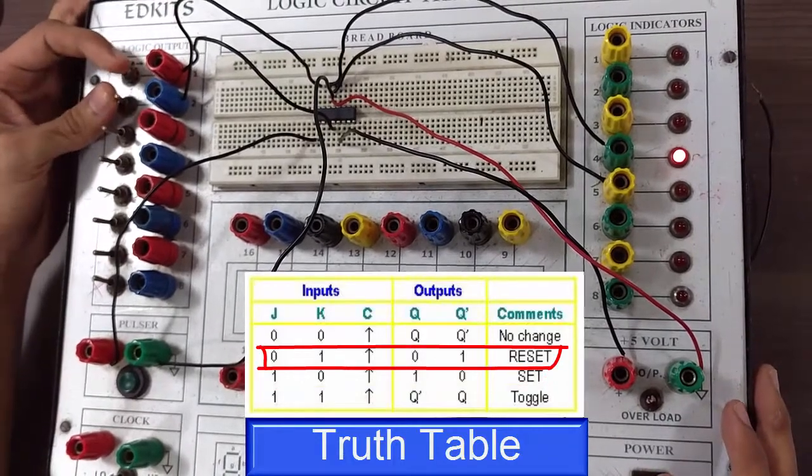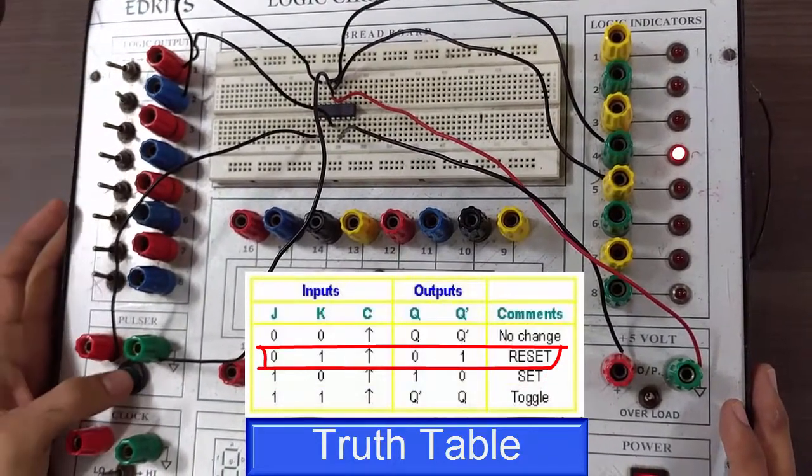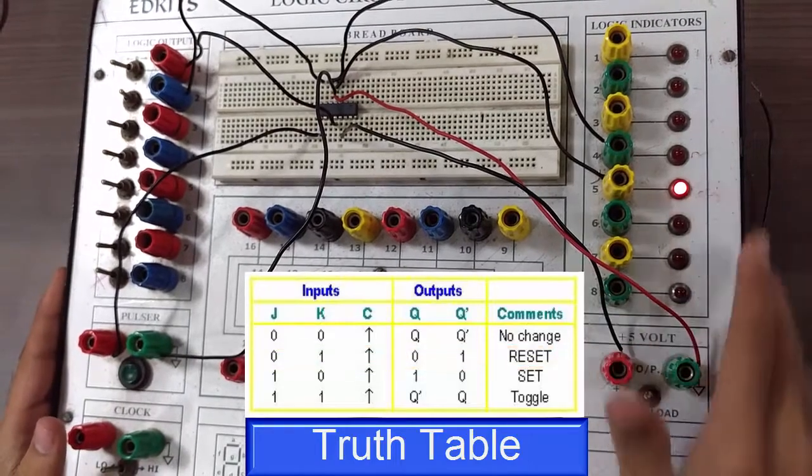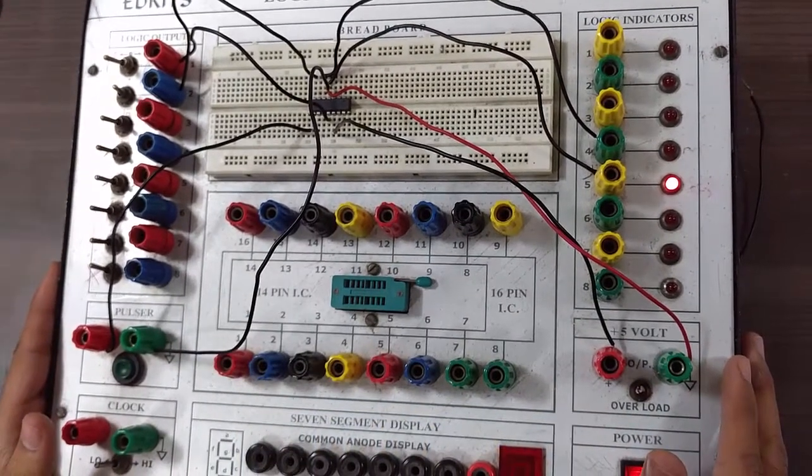Similarly, if you make K as 1 and J as 0 and give a clock pulse, you will find that Qn bar is 1 and Qn is 0. Hence, truth table is verified for JK flip flop.